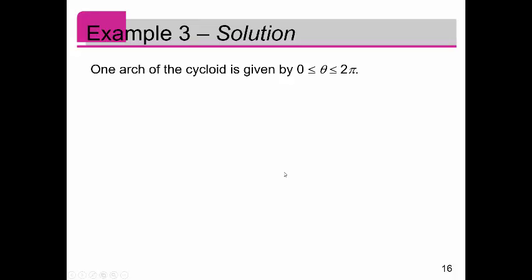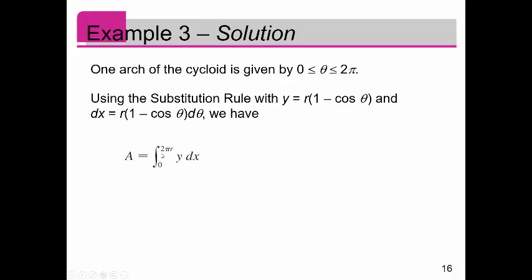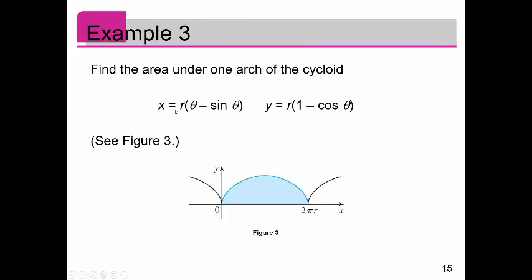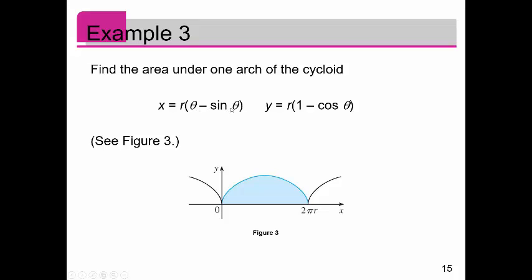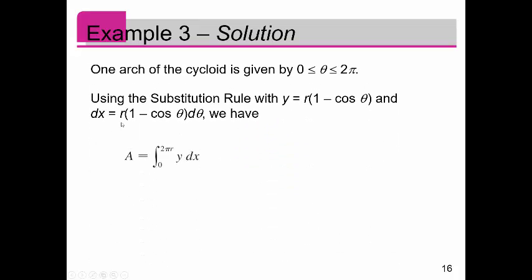One arch of the cycloid is given by theta bound between zero and two pi. That's going to help define our bounds of integration. Using the substitution rule, we know what y is, and we know what x is. If you look back, x is r theta minus sine of theta, so that means dx is r one minus cosine of theta d theta. We're going to replace y with this, and our dx gets replaced by this.